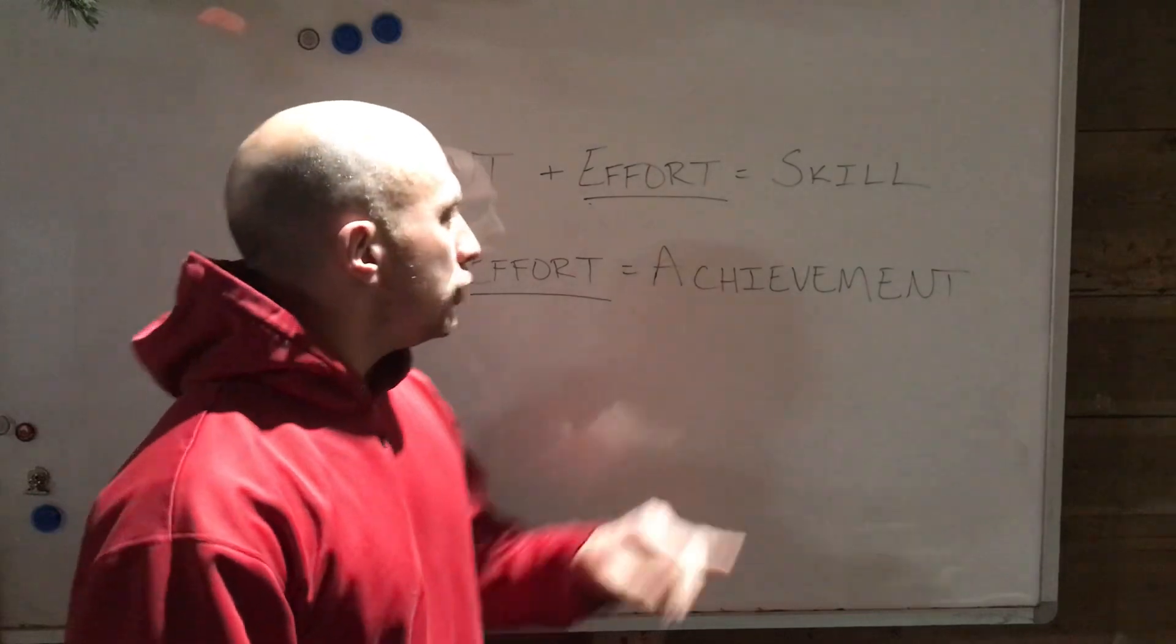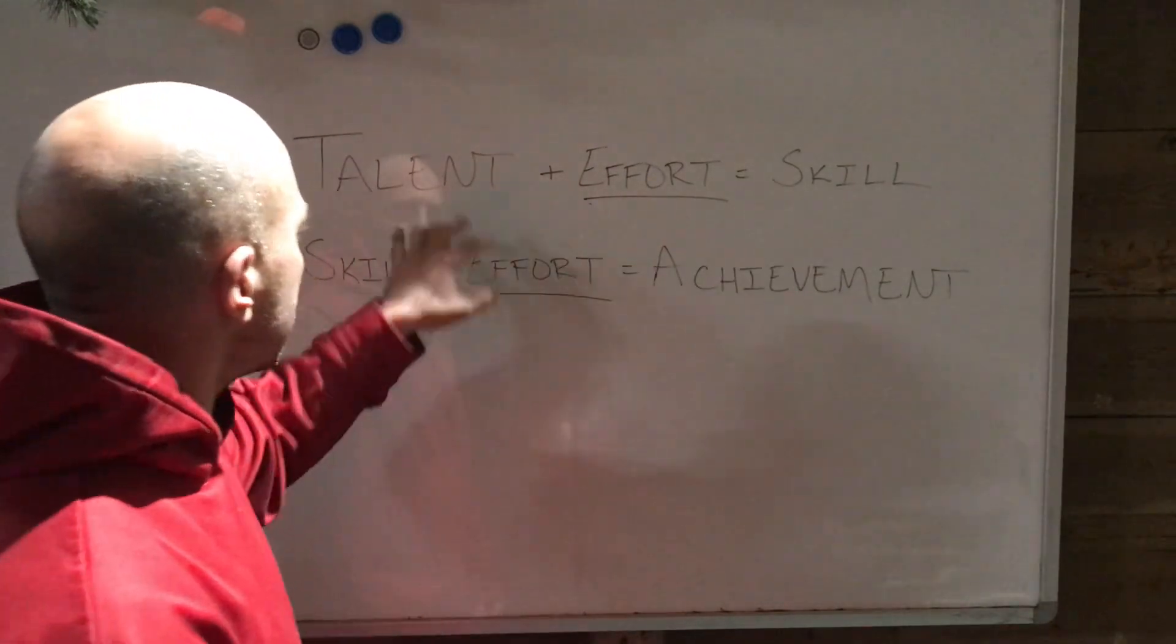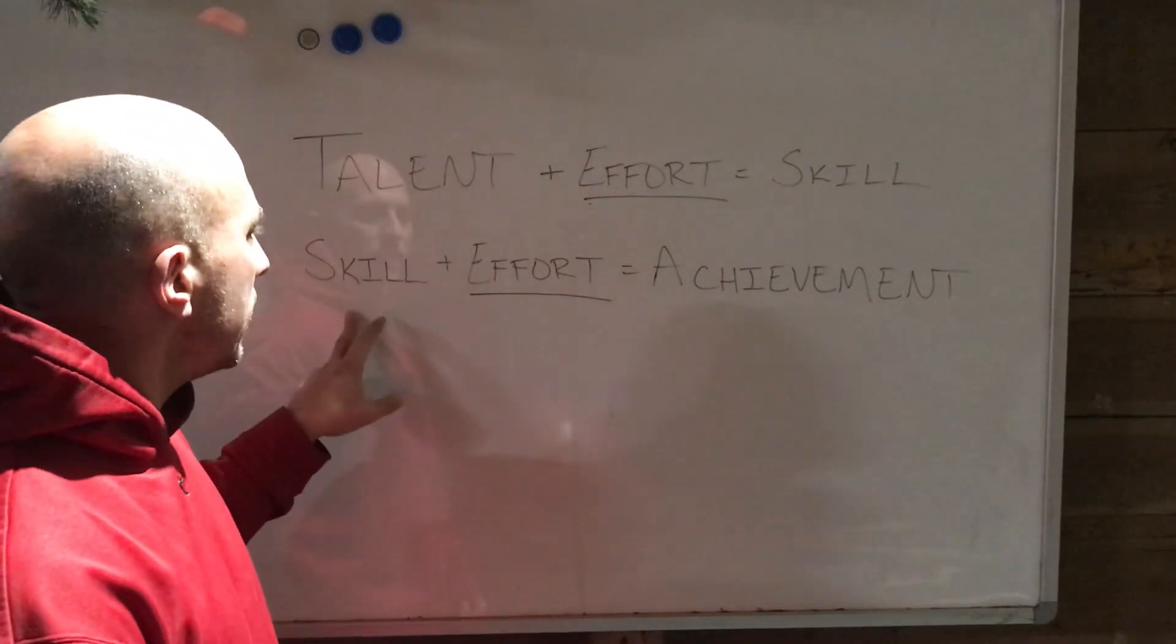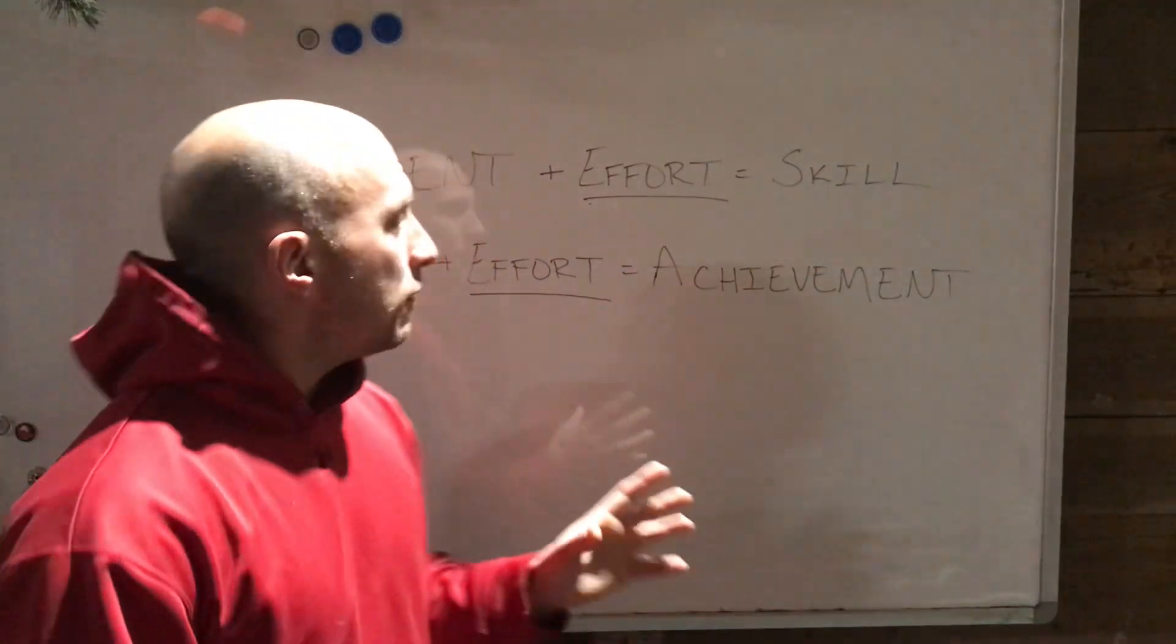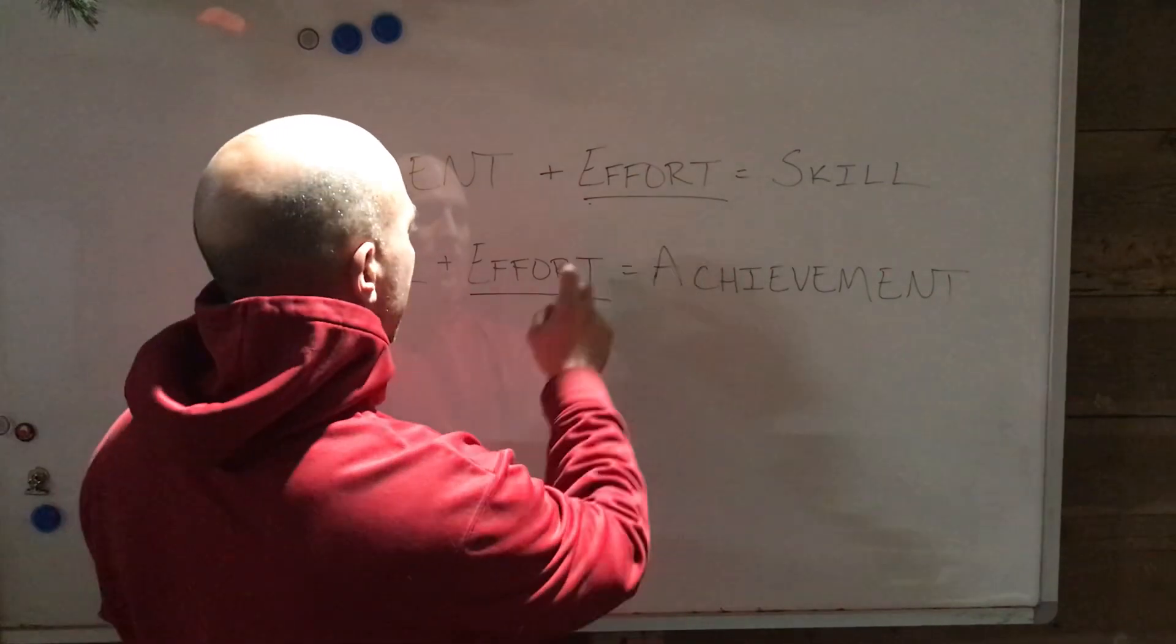And then from there, in order to find achievement, she took skills. So she took talent and effort, that equals skill. And then she added effort on top of that skill. And if you can see a commonality here, it's effort and it's effort.